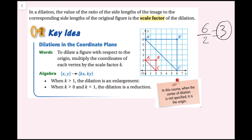Dilations in the coordinate plane: to dilate a figure with respect to the origin, multiply the coordinates of each vertex by the scale factor k. In algebra, take your original point (x, y) and turn that into (kx, ky). When k is greater than one the dilation is an enlargement; when k is greater than zero and less than one it is a reduction. When the center of dilation is not specified it is always the origin. All I did to get these coordinates was multiply the ordered pairs by the scale factor of three.